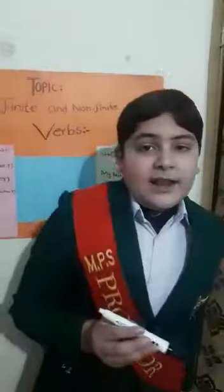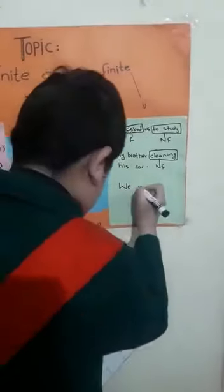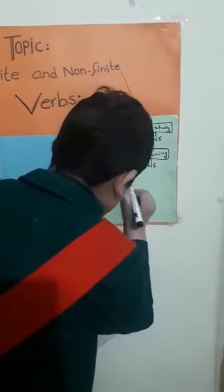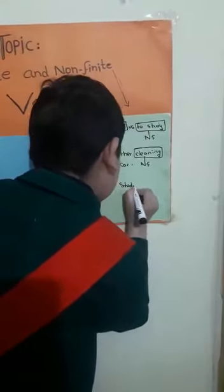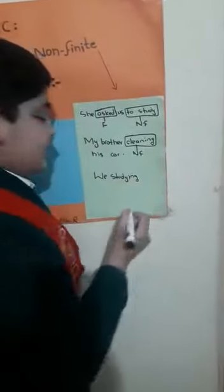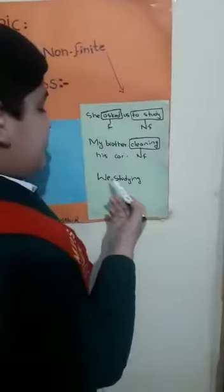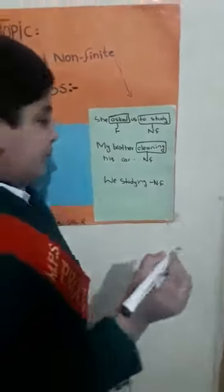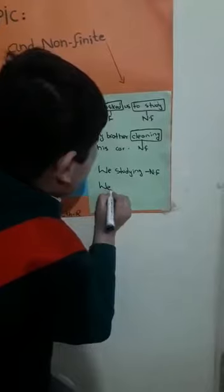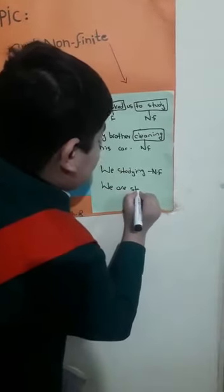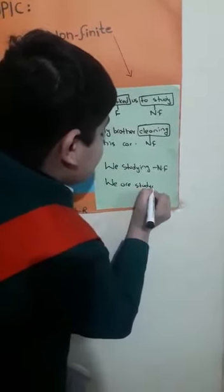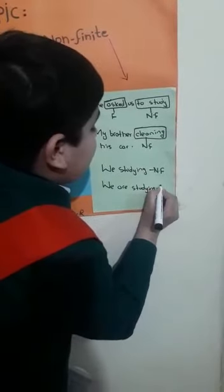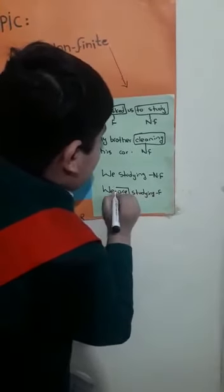We add a helping verb to a non-finite verb to make it finite. For example: 'We studying here' — the helping verb is missing, so it is a non-finite verb. When we add a helping verb: 'We are studying.' So it is a finite verb because the helping verb is present.